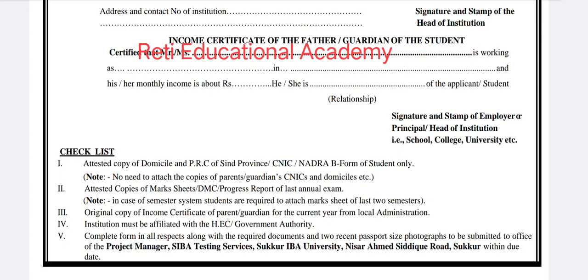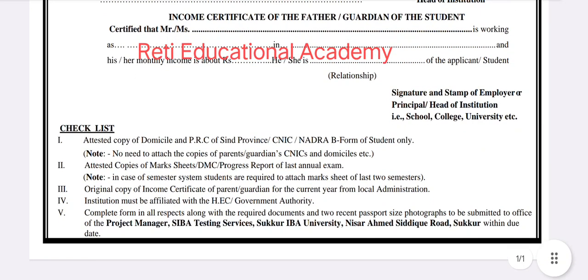Number 2: attested copies of mark sheets, DMC, and progress report of last annual exams. In the case of a semester system, students are required to attach mark sheets of the last two semesters. Number 3: original copy of income certificate of parent or guardian for the current year from local administration. Number 4: institution must be affiliated with HEC or government authority.